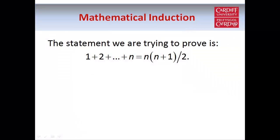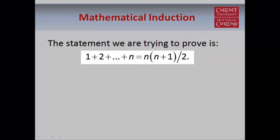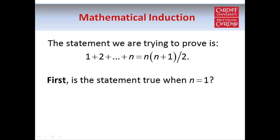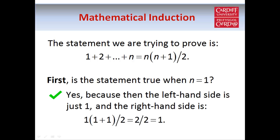So we're trying to prove this statement: if you add together the first n natural numbers, the total is equal to n times n plus 1 over 2. Firstly, let's see if the statement is true when n equals 1. Well, when n equals 1,